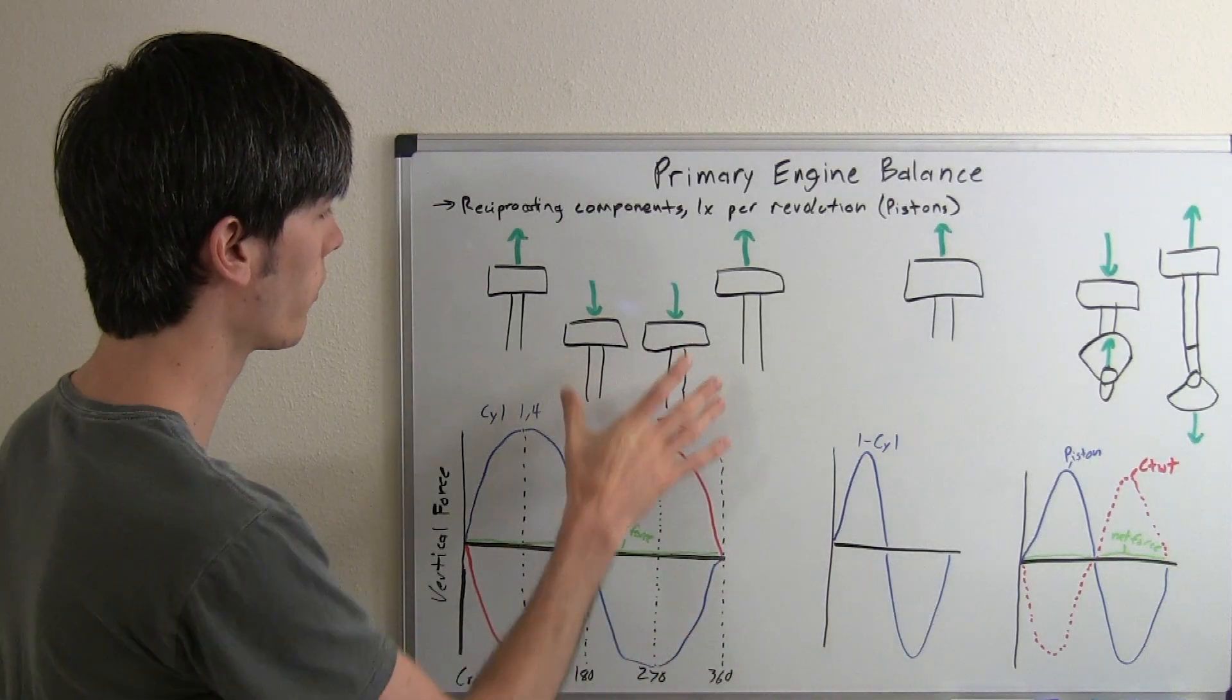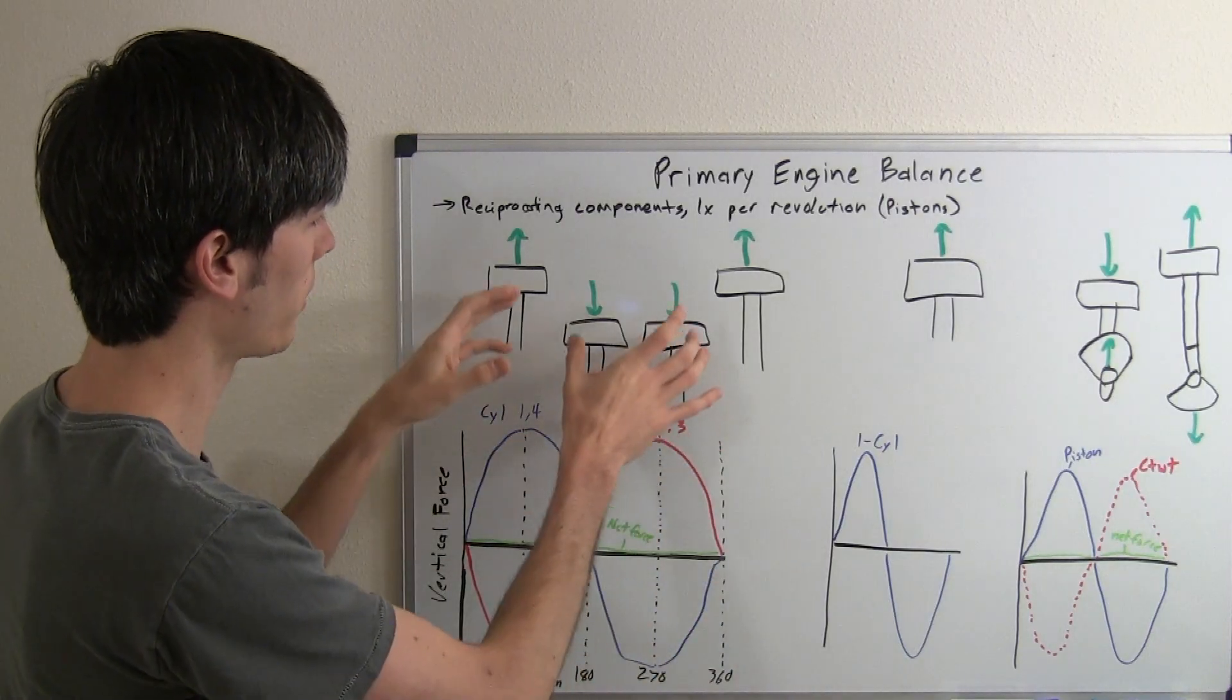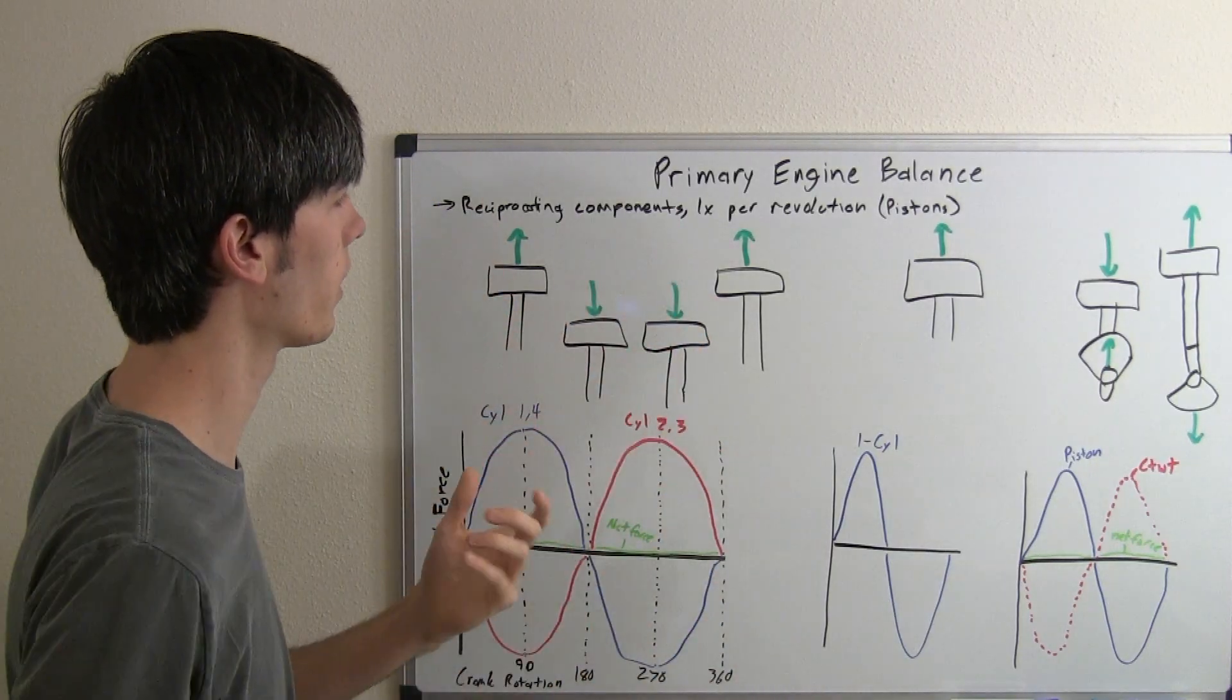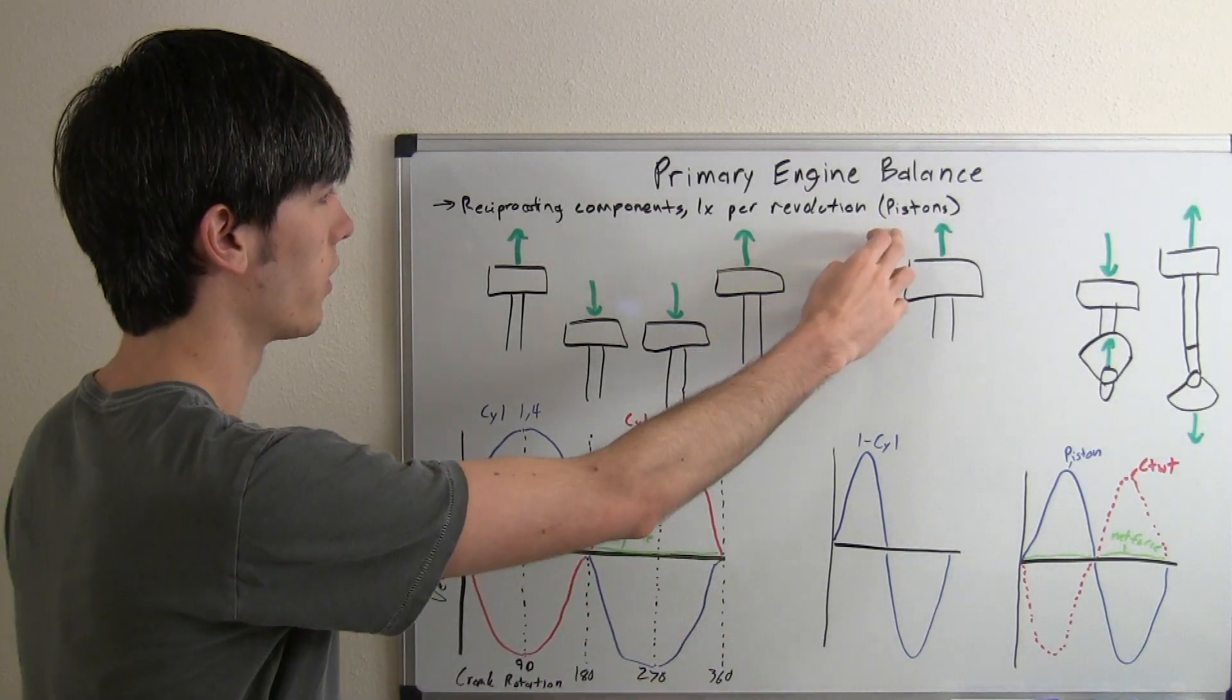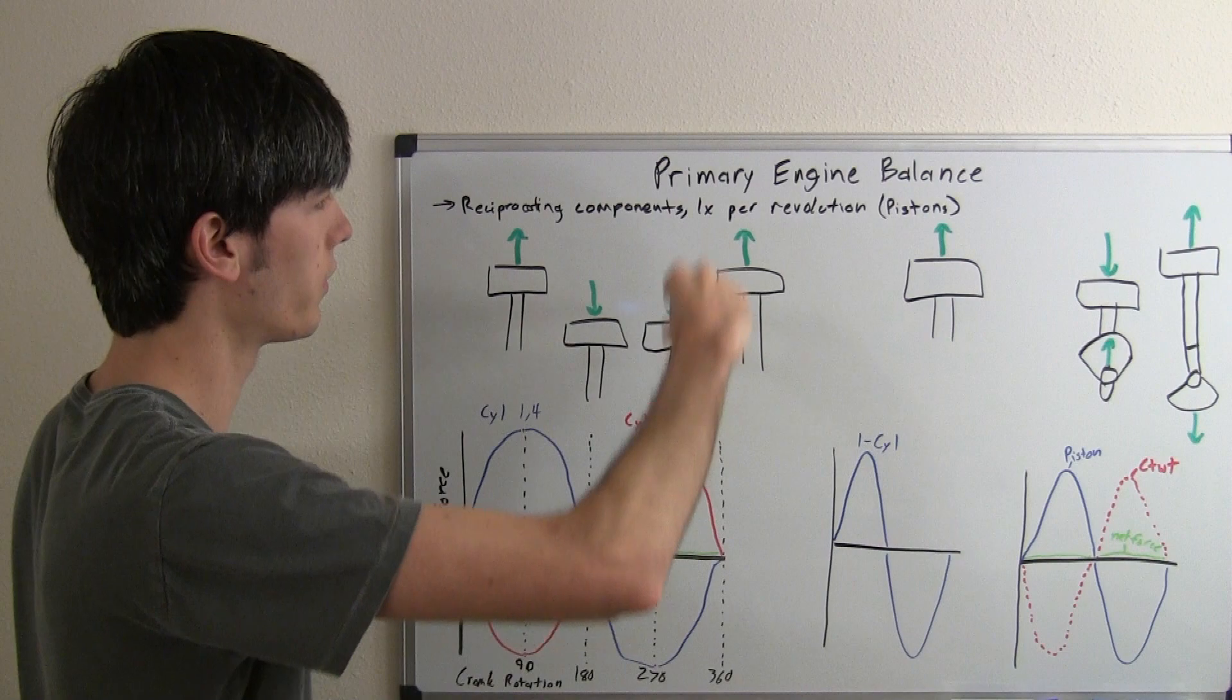Here we have a four cylinder engine and you can see the pistons are going to be moving up and down. The main factor that goes into your primary forces is the reciprocating inertia of your piston.